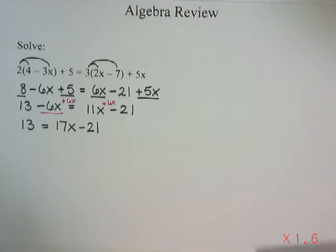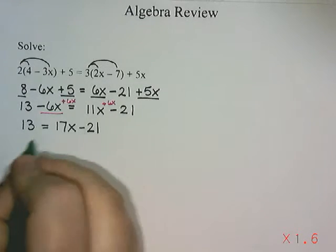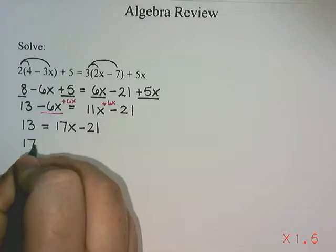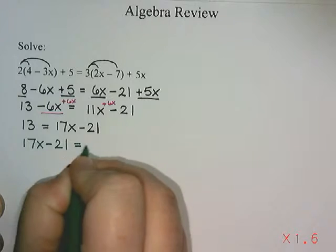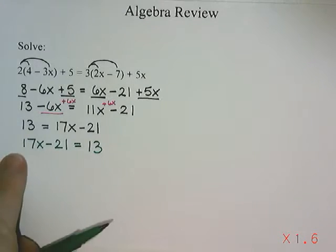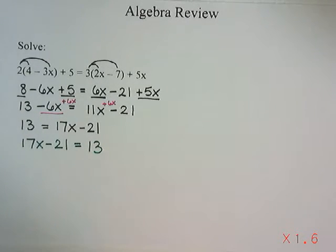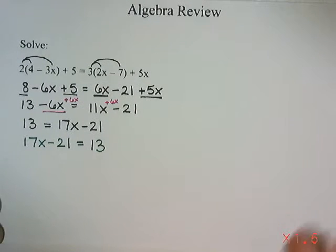Now if you don't like having the x on the right-hand side, if you like having the x on the left-hand side, you can actually just flip your equation over. So as long as you leave everything exactly the way you see it, you can flip the left side and the right side to get 17x take away 21 equals 13. And if you don't need to flip it, you can leave it exactly the way it was before and just keep solving from there.